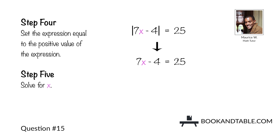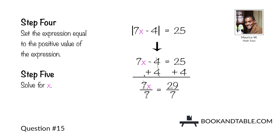Add 4 to both sides, leaving us with 7x is equal to 29. Then negate the coefficient 7 by dividing both sides by 7, leaving us with x is equal to 29/7.